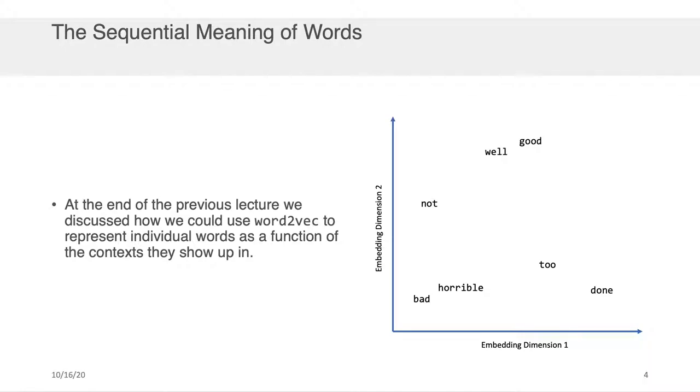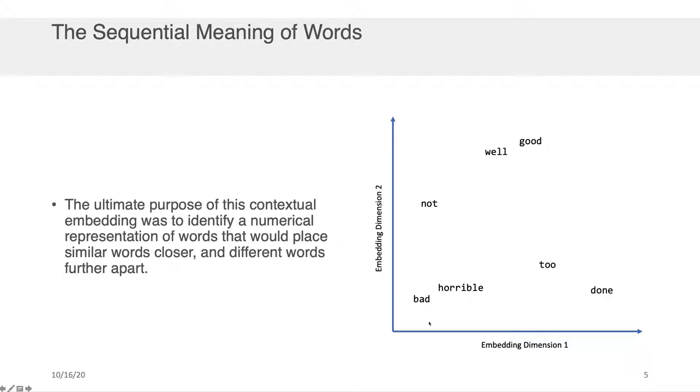Okay, so let's begin with a conversation about the sequential meanings of words. Remember that at the end of the previous lecture we discussed how we could use word2vec to represent individual words as a function of the context they show up in. So for example, we could have an embedding dimension and we could place a bunch of words as a single point within a two-dimensional space if we chose our embedding dimension to be two dimensions. The ultimate purpose of this contextual embedding was to identify a numerical representation of the words that would place similar words closer. So for example, bad is close to horrible, and different words further apart. So bad is further away from good than bad is from horrible, for example.